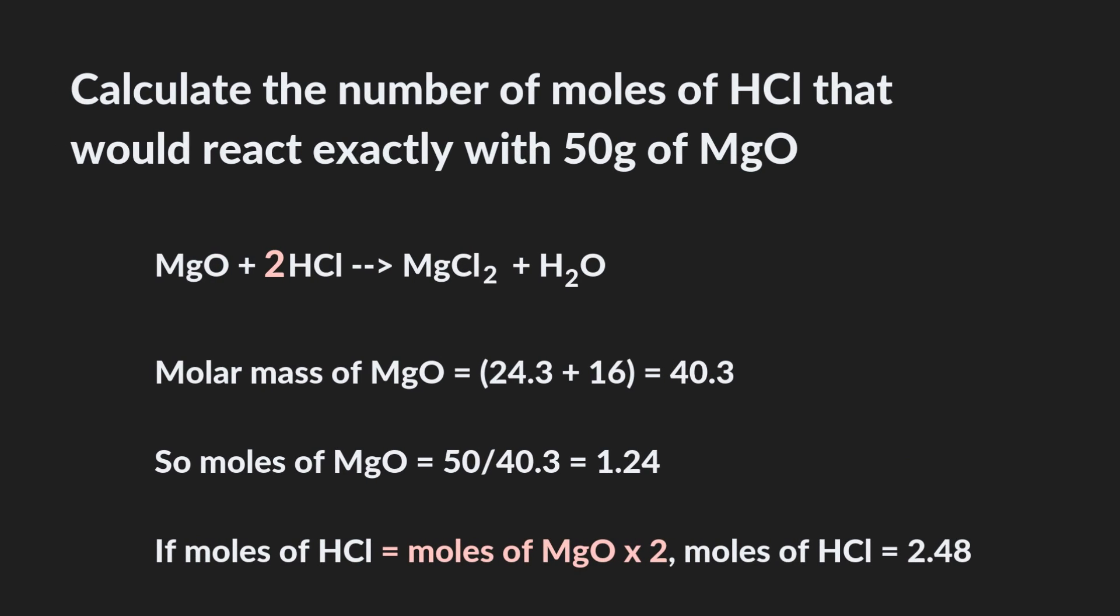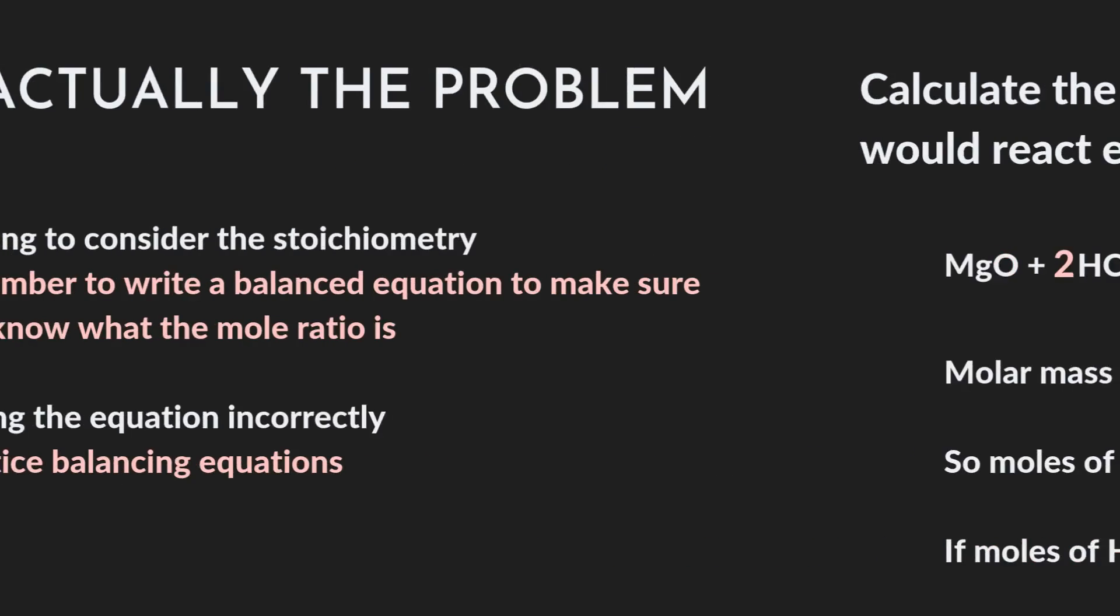But the number of moles of HCl isn't actually going to be the same as the number of moles of MgO for this reaction. In fact, if you actually write out the full balanced equation, you can see that MgO and HCl react in a 1 to 2 ratio. This means the number of moles of HCl will be equal to the number of moles of MgO times 2, and that gives us the correct answer of 2.48 moles.